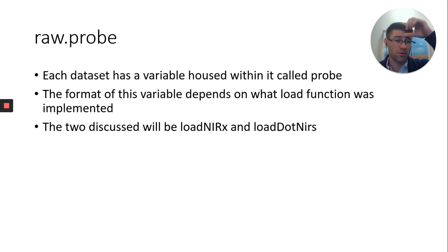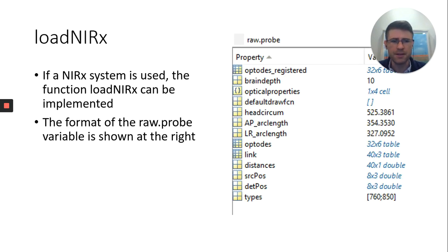So this probe variable is different depending on what load function you use. If you're using a NIRx system, you typically have two options on how to load your data in. This can be either the loadNIRx function or the load.NIRx function. These are actually a little different depending on which you load in, and this is strictly because with NIRx data, you automatically have an atlas and atlas information. So when plotting on a three-dimensional atlas, it's already registered there.